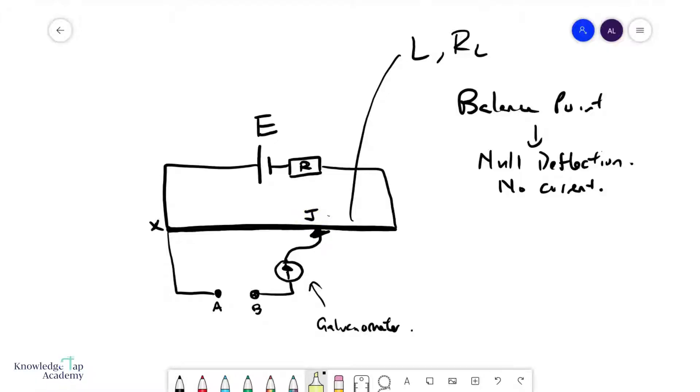What we need to understand is what is so special about this balance point. If there is no current here then the potential at j, Vj, must equal the potential at b, Vb.